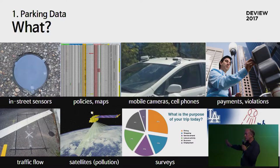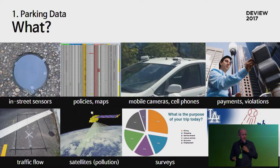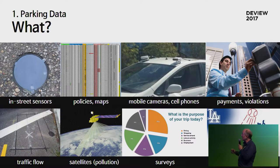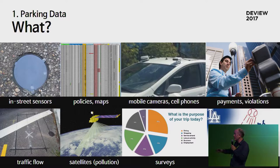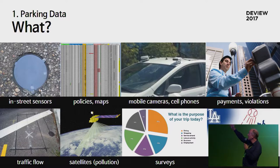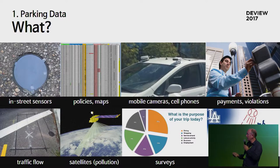We also have data from parking meters. Now, you might think that you can tell exactly how many cars are parked in the street just by looking at the parking meters. But, of course, not everybody pays, and sometimes they pay too much - they don't know how long they're going to stay. But, as with many data processing problems, you can do a lot by fusing different kinds of data. For instance, we can use information from in-street sensors and couple it with data from payments in order to work out which spaces are occupied but unpaid, in which case we can send enforcement officers.